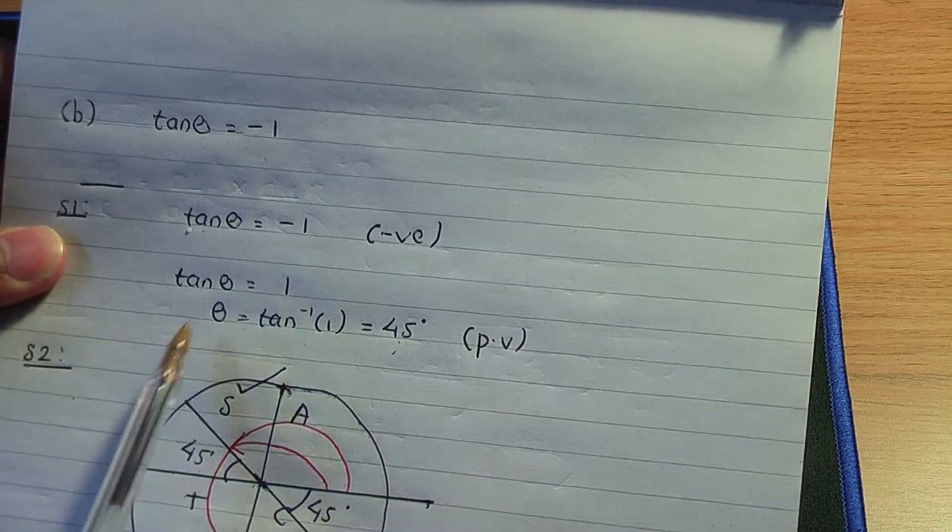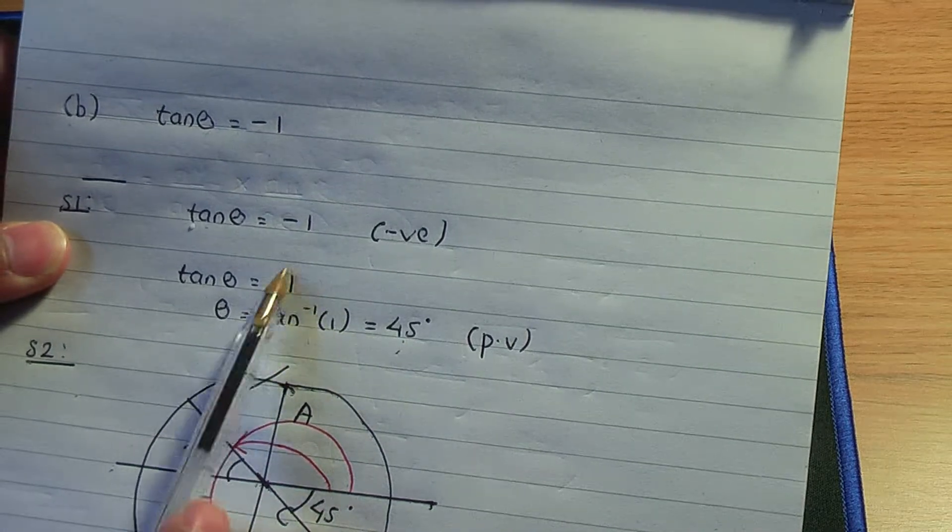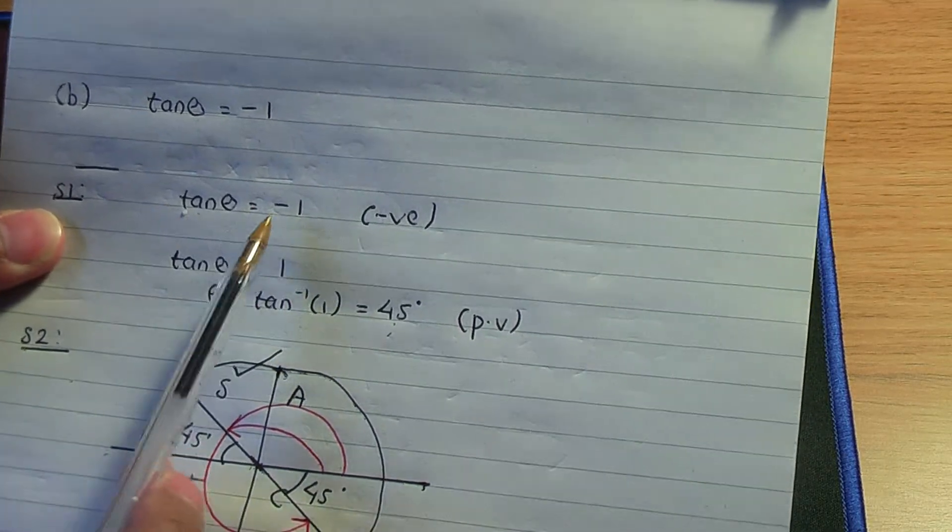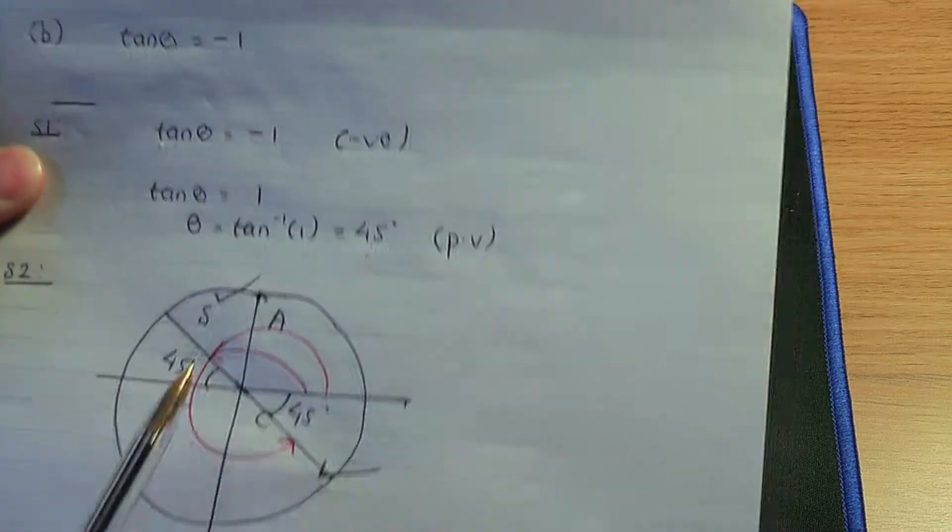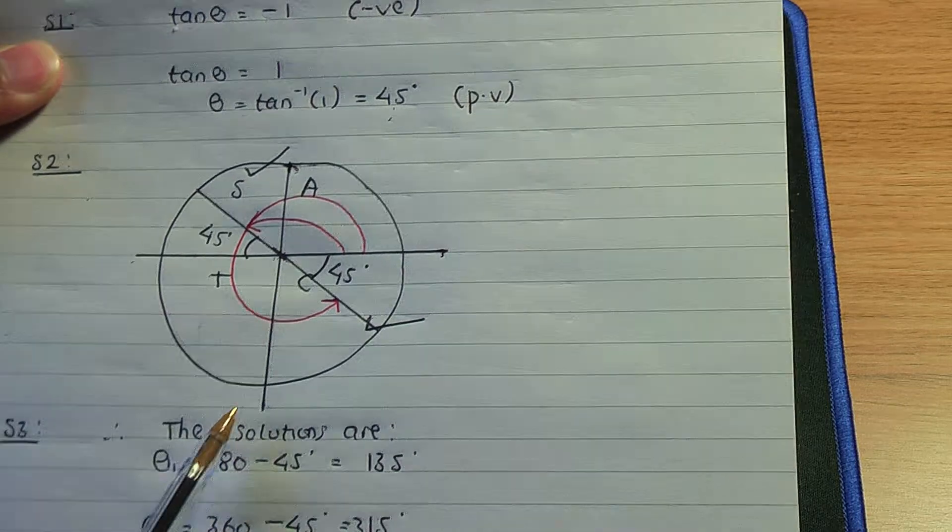We only look at that negative sign when plotting the angles themselves on the CAST diagram.